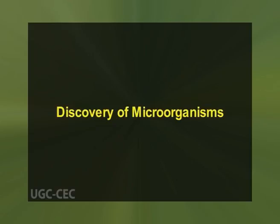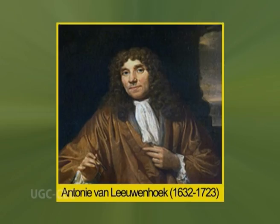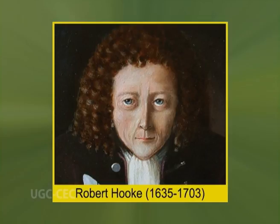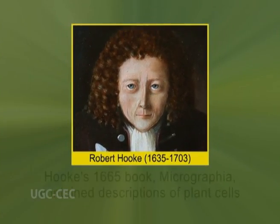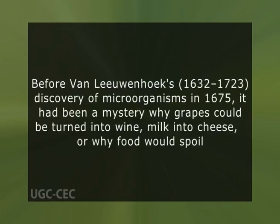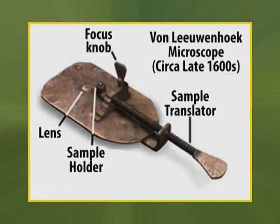Antony van Leeuwenhoek was one of the first people to observe microorganisms using a microscope of his own design and made one of the most important contributions to biology. Robert Hooke was the first to use a microscope to observe living things; his 1665 book Micrographia contained descriptions of plant cells. Before van Leeuwenhoek's discovery of microorganisms in 1675, it had been a mystery why grapes could be turned into wine, milk into cheese, or why food would spoil. Van Leeuwenhoek did not make the connection between these processes and microorganisms, but using a microscope he established that there were forms of life not visible to the naked eye.